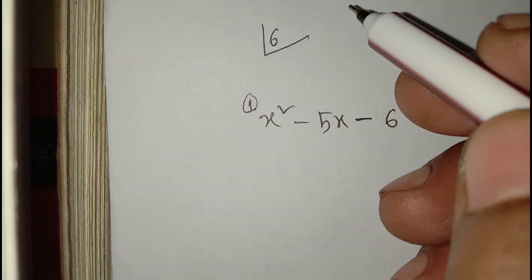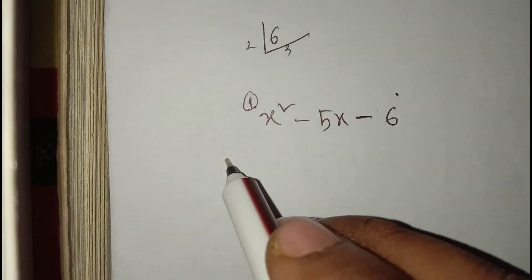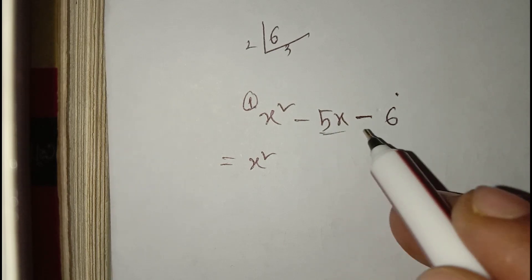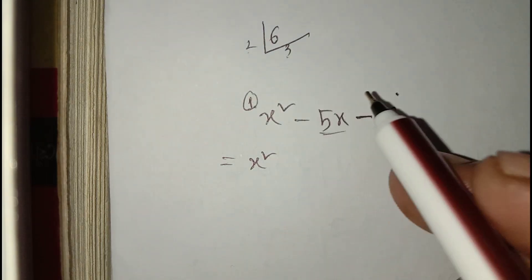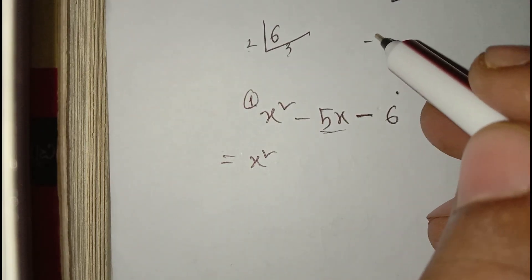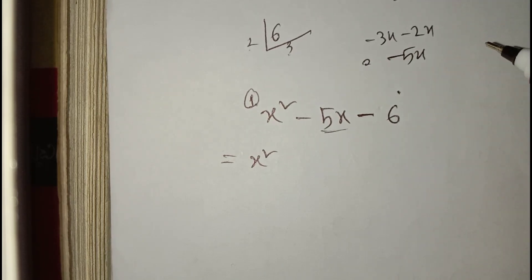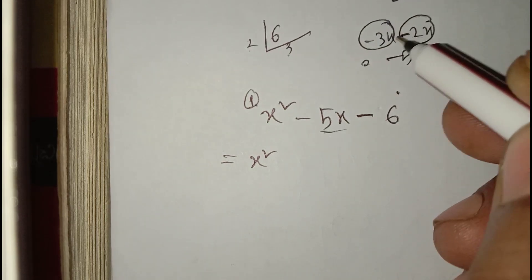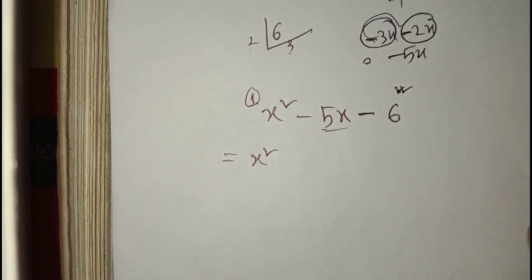We have to find the factorization of six: two times three is six. Now for x squared, we have to factorize 5x into two parts. Three plus two equals five. But if we take minus three x and minus two x, that gives minus five x, and multiplying minus three and minus two gives a positive six, which does not match this equation.